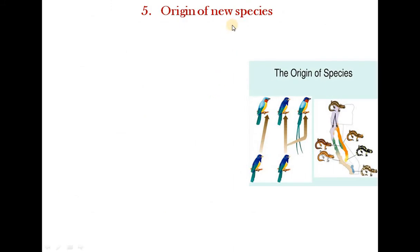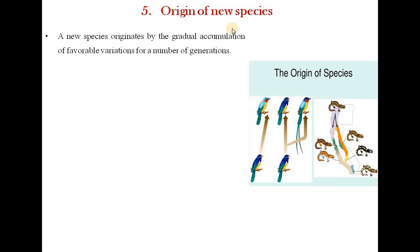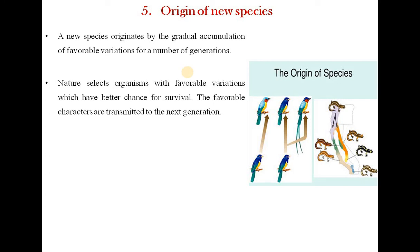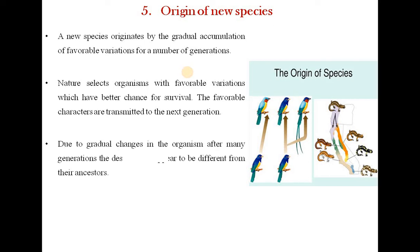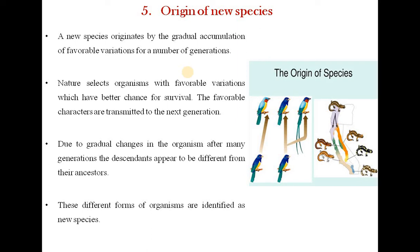The fifth principle is origin of a new species. A new species originates by the gradual accumulation of favorable variations over a number of generations. Nature selects organisms with favorable variations which have better chances of survival. The favorable characters are transmitted to the next generation, and due to gradual changes over many generations, the descendants appear to be different from their ancestors. These different forms of organisms are identified as new species.